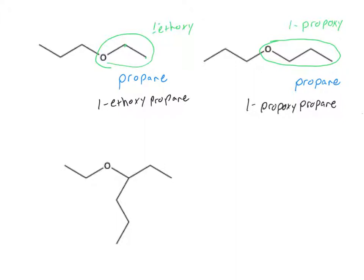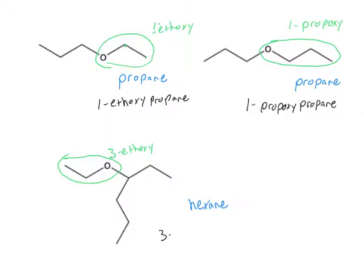Let's look at our last example. Again, we're going to identify our longest carbon chain, which is six carbons, making our root for this compound hexane. Then we look to our ether substituent, and we see that coming off that oxygen we have two carbons, making it an ethoxy substituent. Now we need to look at our numbering. If we number from one direction, we get our substituent on the fourth carbon. Coming from the other direction, our substituent is on the third carbon. So we're going to start our numbering from the end that gives the lower number, giving our substituent a number of three, and making our final name of this molecule 3-ethoxyhexane.